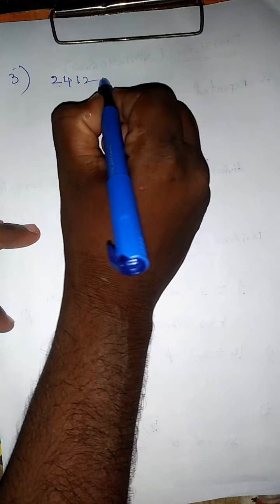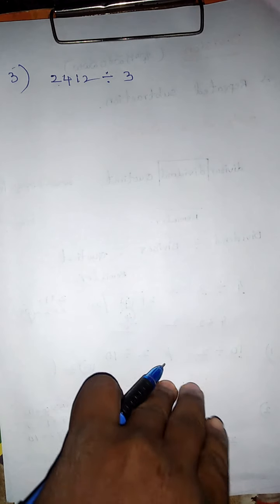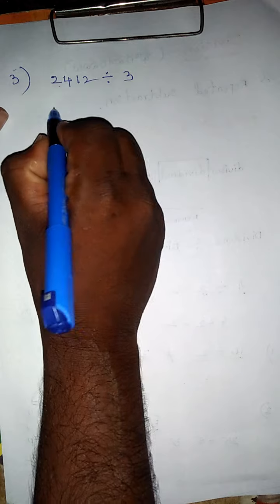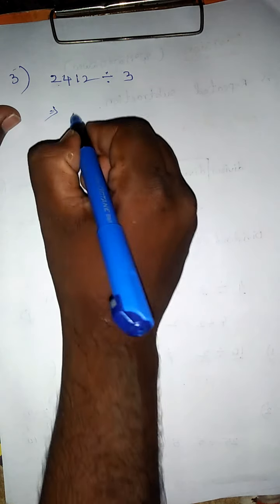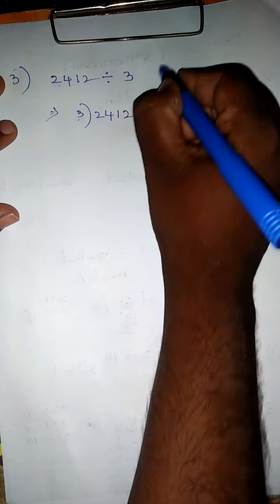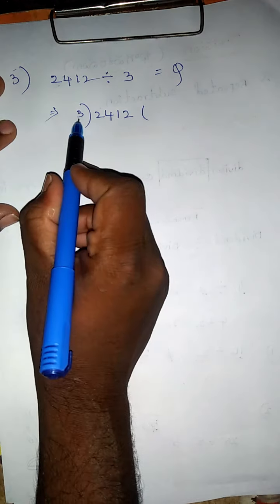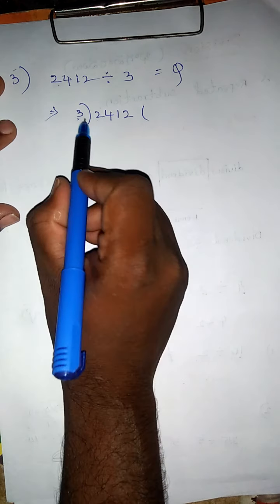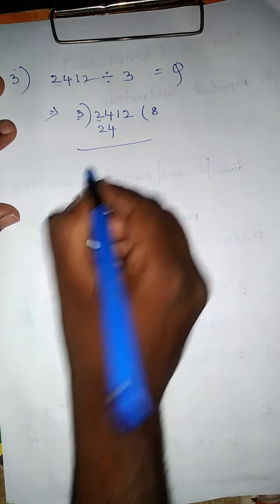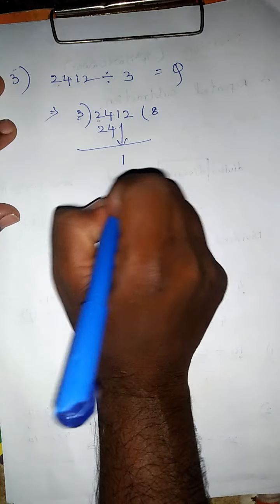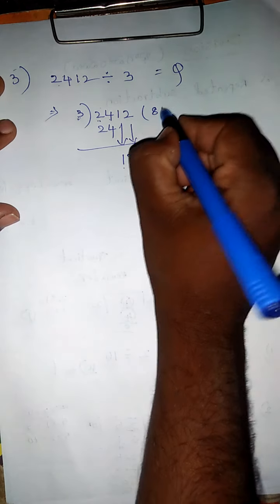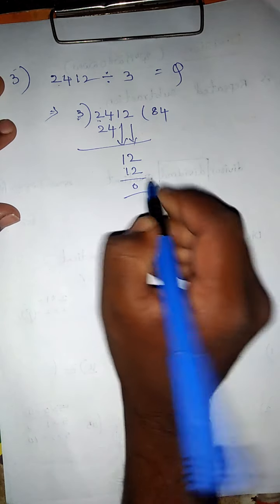Next problem: two thousand four hundred twelve divided by three. Many students make mistakes on this problem. We write the dividend in the middle, divisor is three. Three is too small for two, so we take the next number. Three eights are twenty-four.